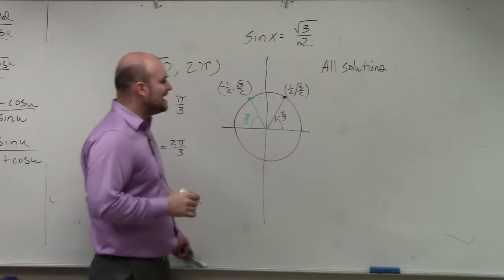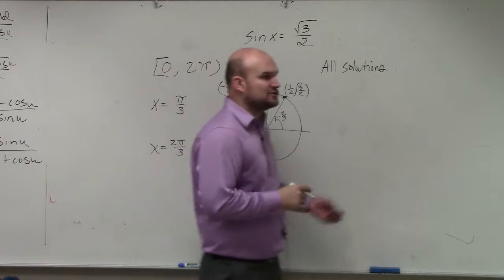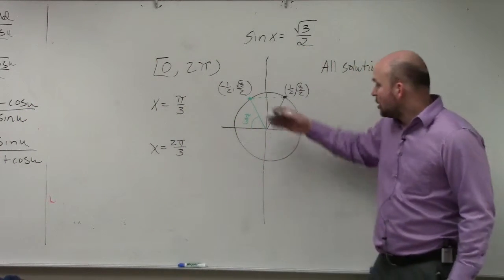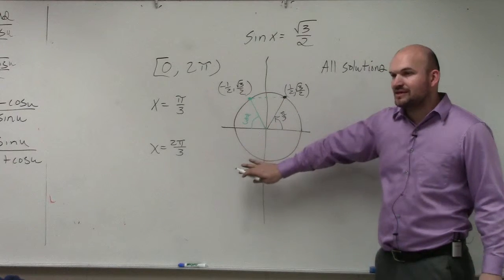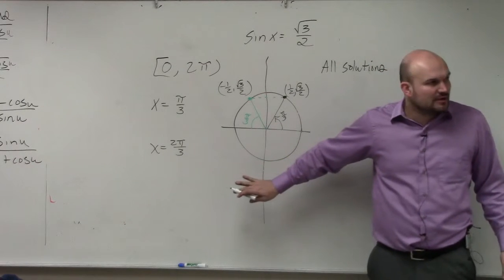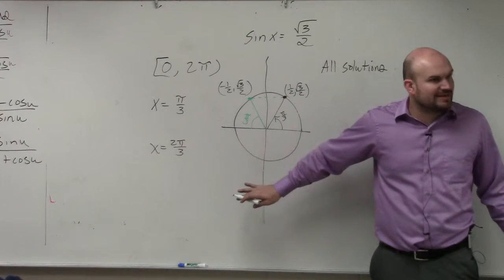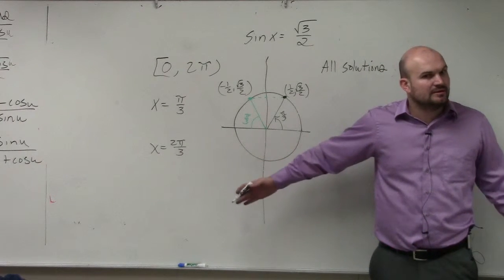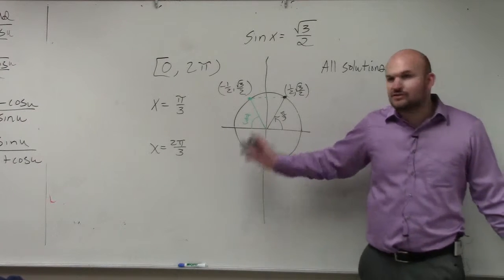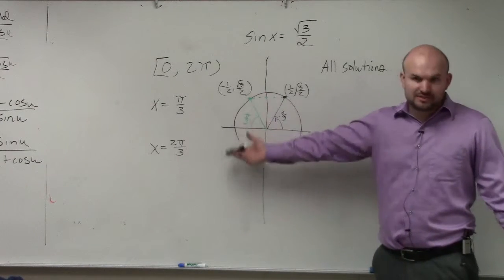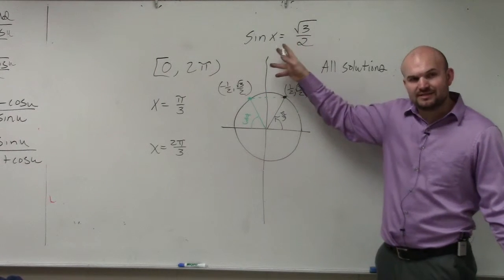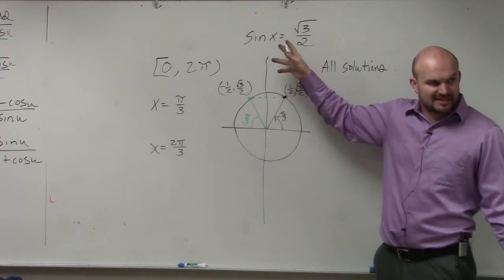That's how to find all the answers between 0 and 2π. Because all the answers down here — the sine value, the y-coordinate — would be negative. So therefore it wouldn't be a solution, because we're only dealing with the positive.